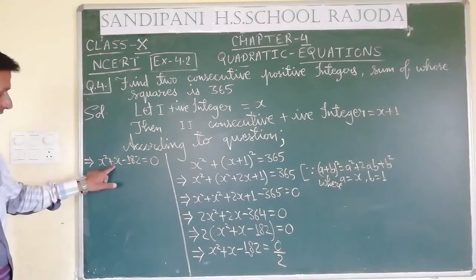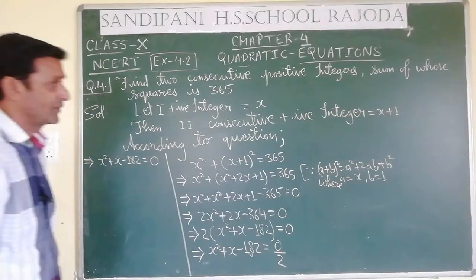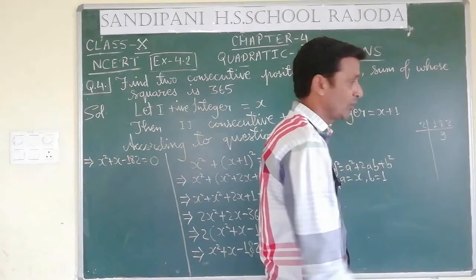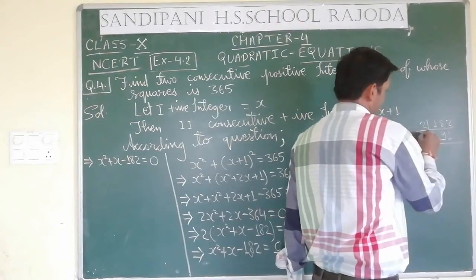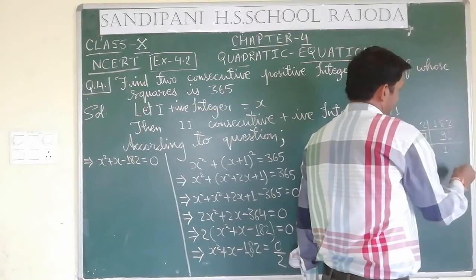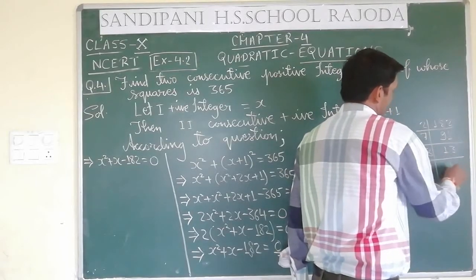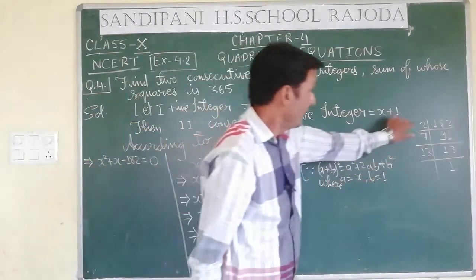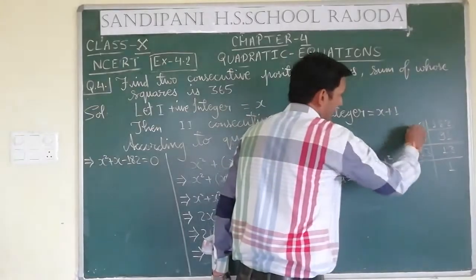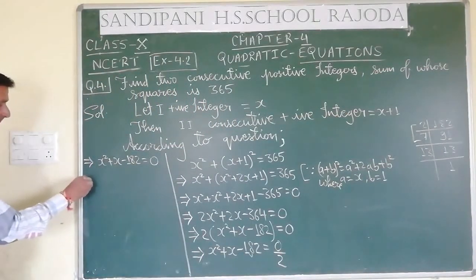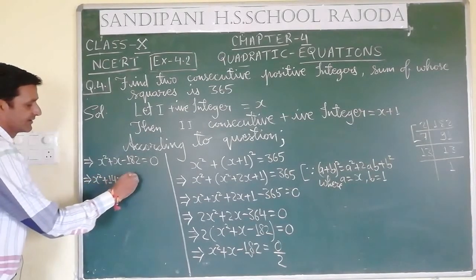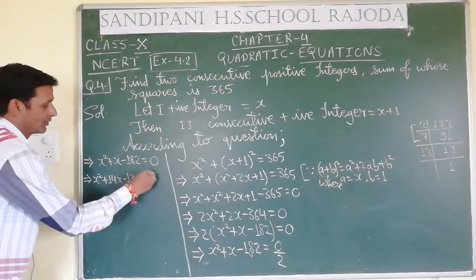Now we need factors of 182 whose difference is 1 (the coefficient of x) and product is negative 182. From our previous question, 13 and 14 are factors of 182. Here 14x minus 13x gives positive 1, so we write: x² plus 14x minus 13x minus 182 equals 0.